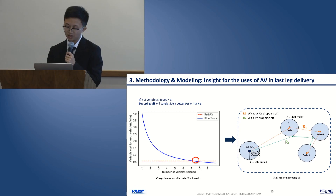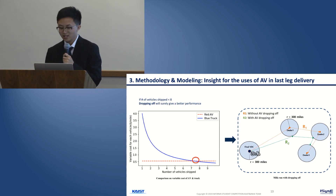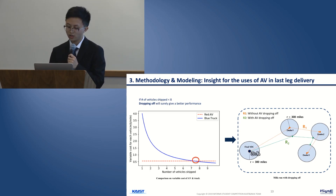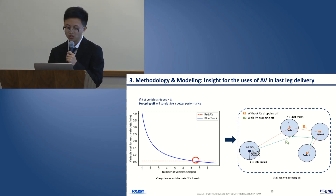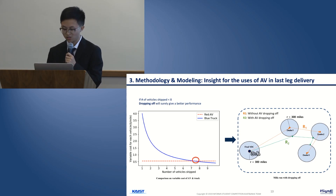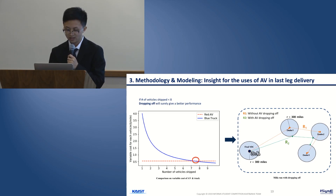Based on this cost analysis, we consider the combination of truck and AV in the last-leg delivery. Assume there are three dealers to cover. Previously, if the distance between the final VDC and dealers is larger than 300 miles, we must use the milk-run truck. Now, if we combine the features of AV and truck, we can let the truck drop off the AV at a point 300 miles from each dealer, shortening the distance the truck drives. This animation shows our idea: the truck drops off AVs at optimal points along the route.